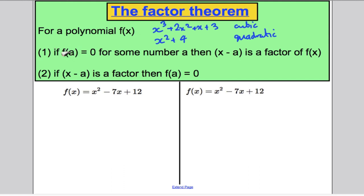The factor theorem says: if we can find a number — call it a — such that when you substitute a in for x in your polynomial you get the answer zero, then you know that x minus a is a factor of the polynomial. If you can find a number that makes the polynomial zero, x minus that number is a factor. The theorem also works the other way: if x minus a is a factor, then substituting that number into the polynomial gives you zero.